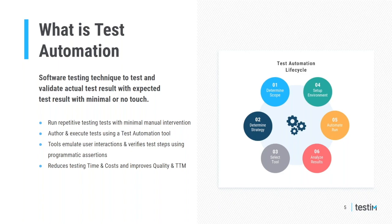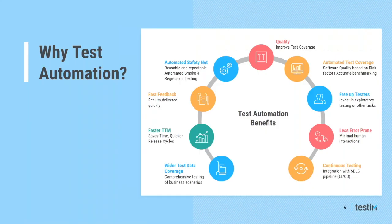A common misconception is that test automation will replace manual testers — that is not true. Manual testing is still needed for exploratory testing, and not every test can be automated. The test automation lifecycle comprises determining the scope of testing, the strategy, what tool you're going to use, test execution including setting up the environment and automating the test run, and then analyzing results.